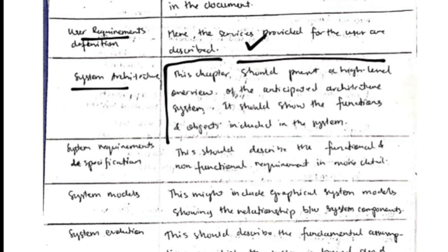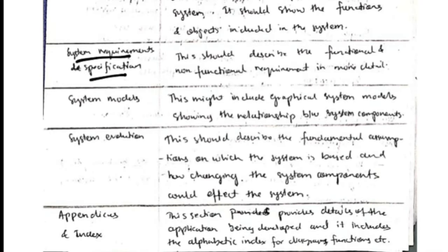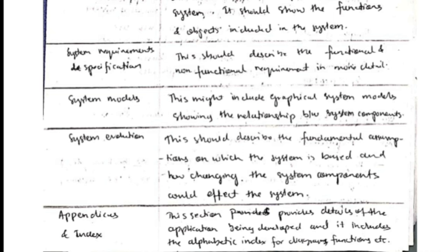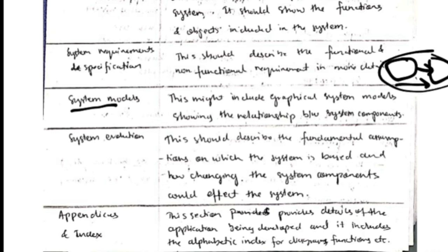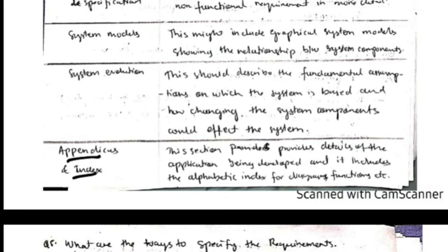The document also includes: system requirements and specifications — detailing the requirements and specifications; system models — a model for each requirement presenting the flow of the process; system evolution — giving an idea about changes to be made in upcoming time if circumstances change; and appendices and index — an alphabetical listing of all terms, graphs, diagrams, and functions used.